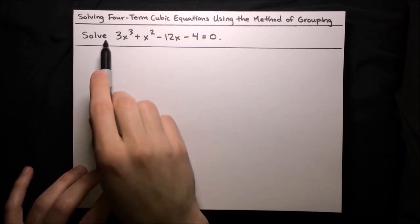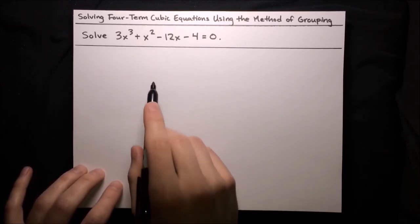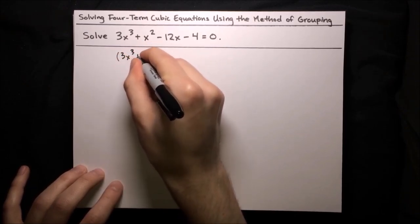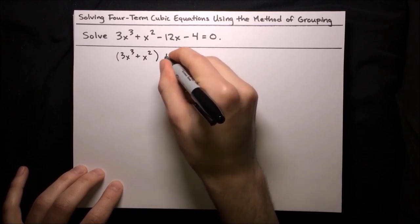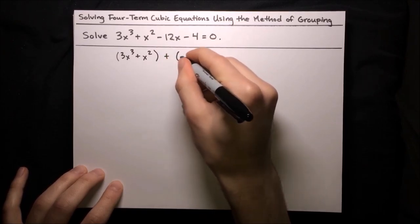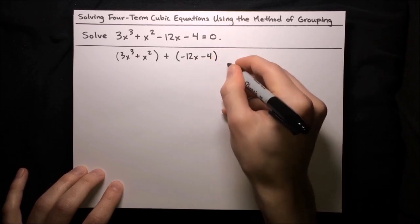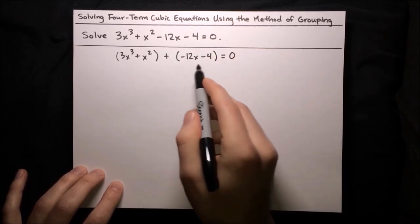First, let's group the left-hand side. The first step in grouping is to separate the highest and lowest order terms. So let's separate 3x cubed plus x squared — put those in a group — and then plus the negative 12x minus 4, the lowest order terms. Put those in a group, and that has to equal 0.